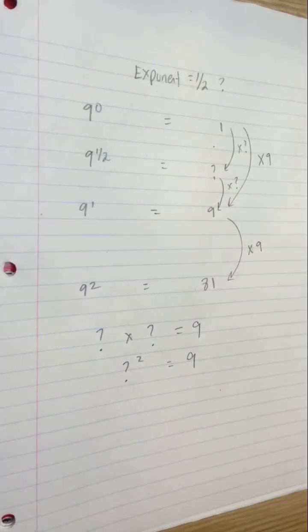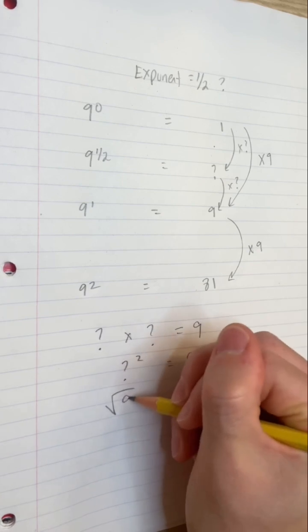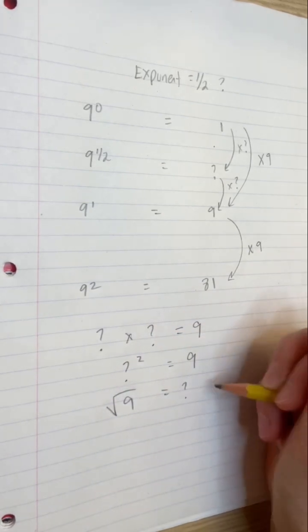So what times itself is 9? What squared is 9? To answer that, let's take the square root of 9, and it's 3.